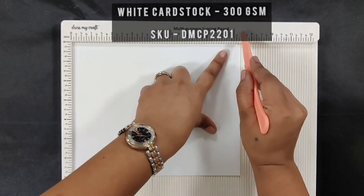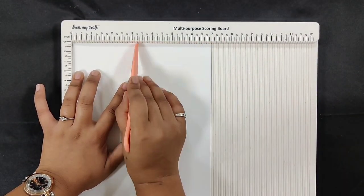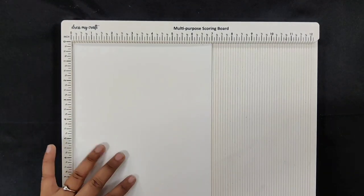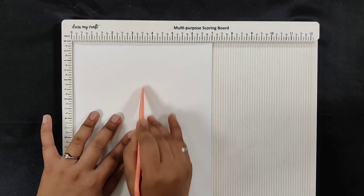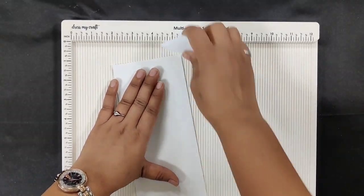Take a piece of white cardstock measuring eight and a half by seven inches. Score on the seven-inch side at three and a half inches using Dress My Craft multi-purpose scoring board, then fold on the score line. This will give you a card base.